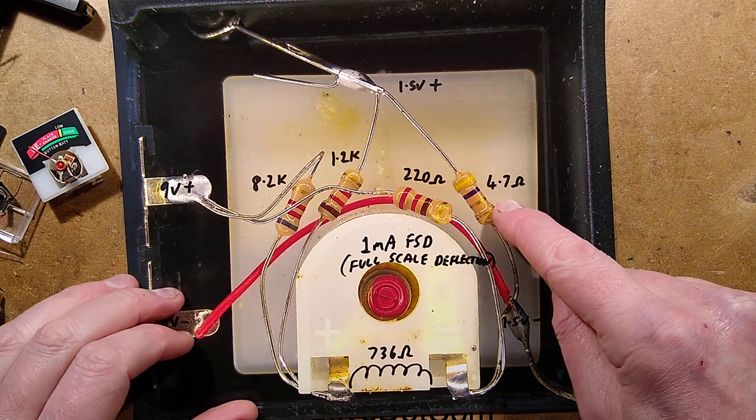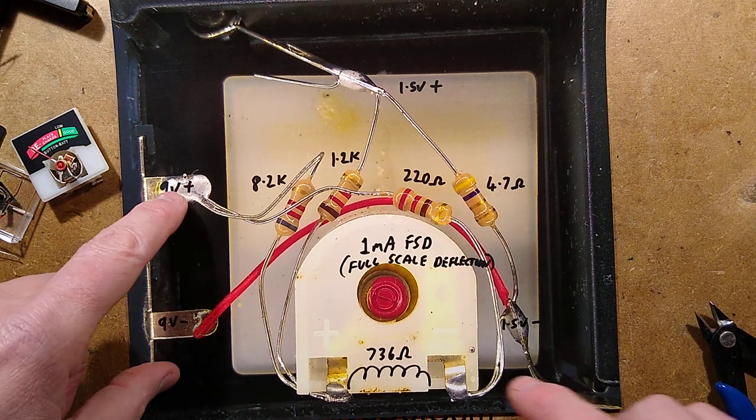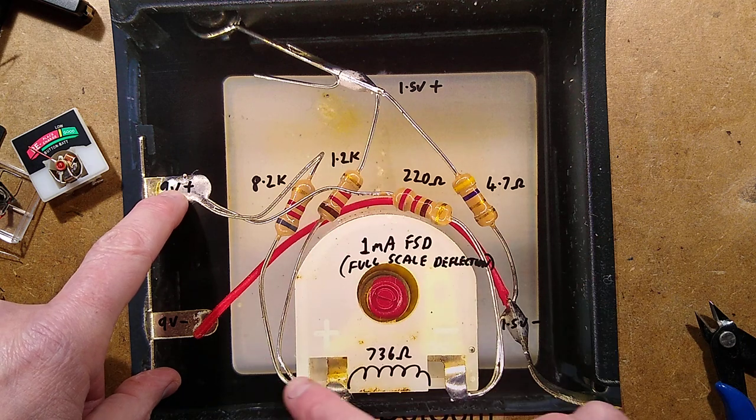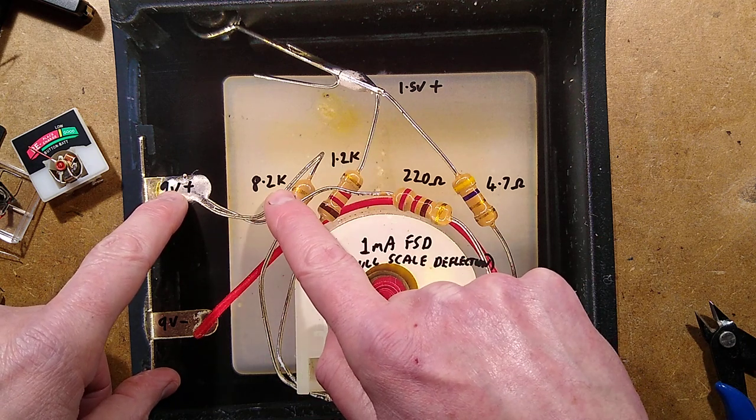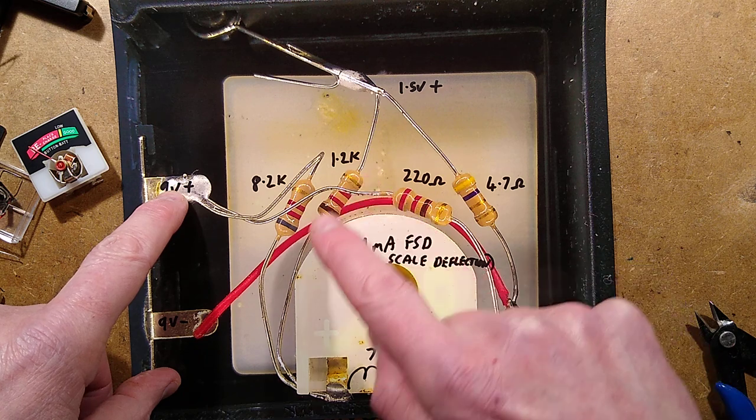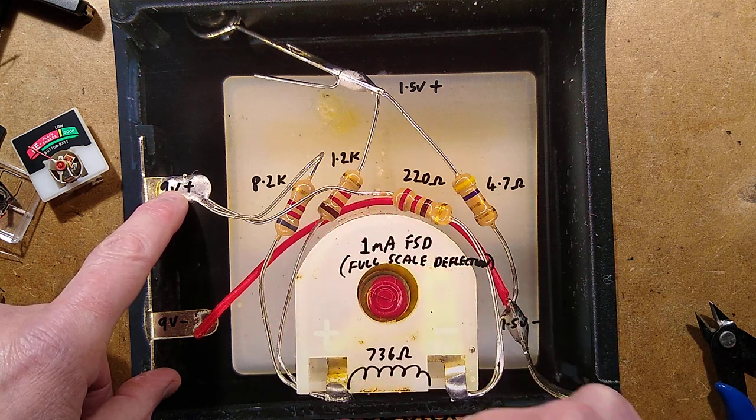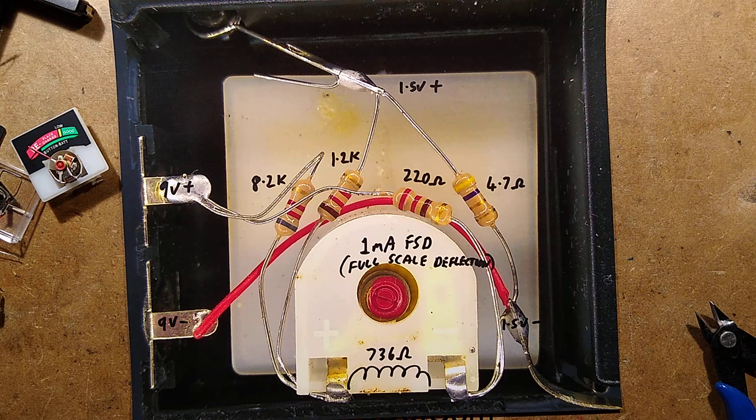In the case of the 1.5 volt cell that's higher capability, it's a 4.7 ohm resistor. The 9 volt battery, because it's a higher voltage to limit the current through this coil, it uses an 8,200 ohm resistor. And the 1.5 volt battery uses a 1,200 ohm resistor. So let me show you the schematic for this.